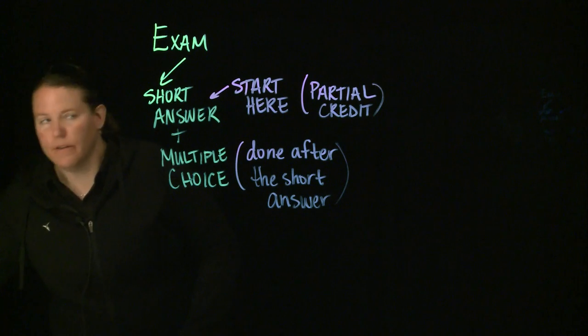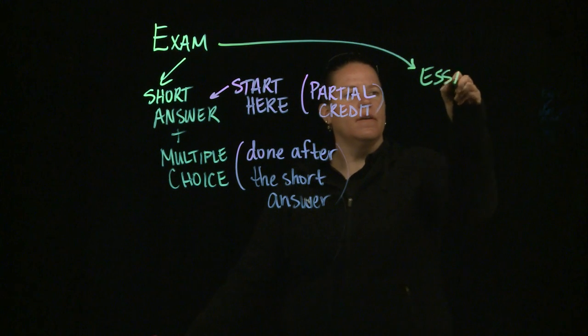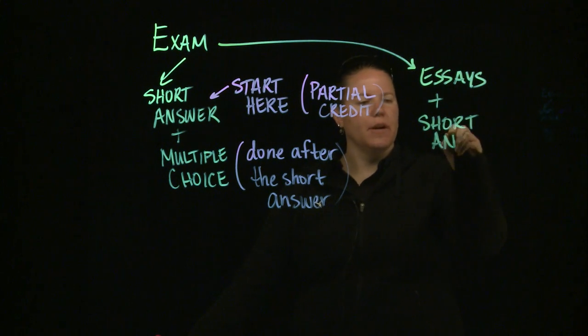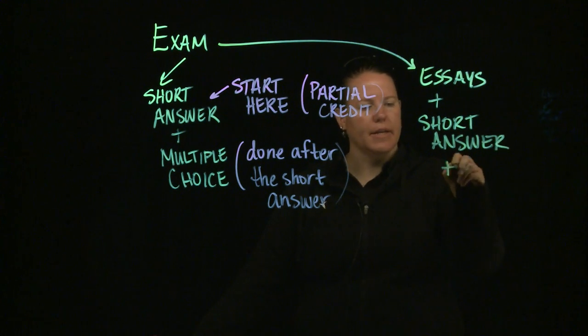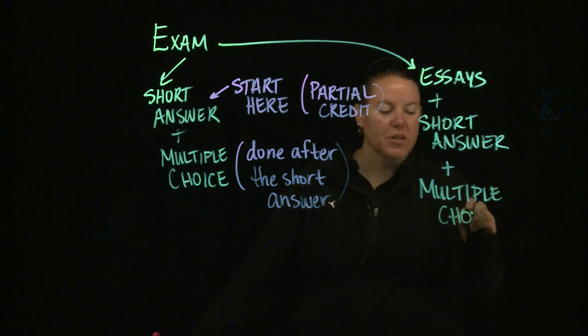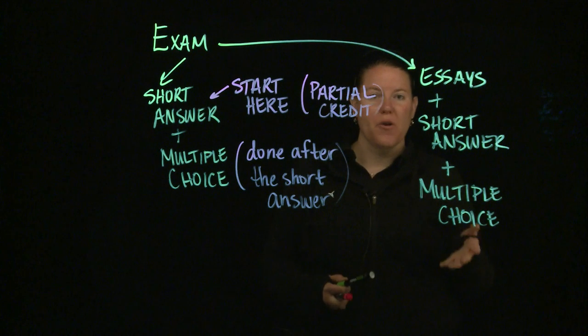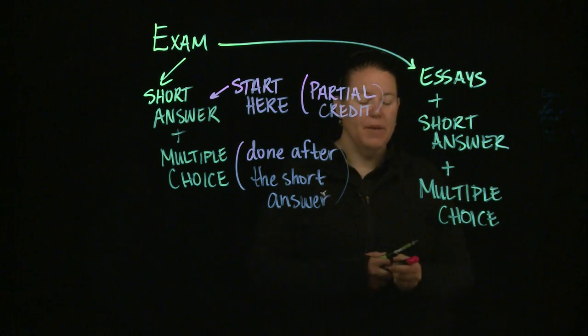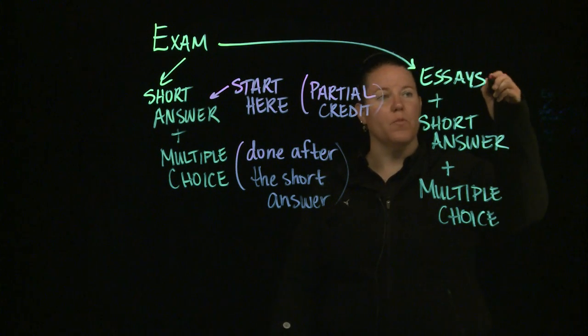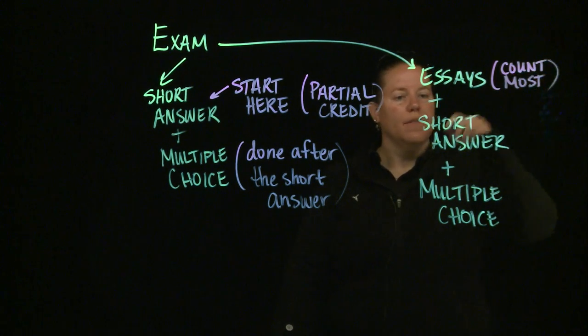What if you have essays plus short answer plus multiple choice? We have something that's all of them added together. Well, the idea here is that usually the multiple choice are up front. Usually the structure of the test is exactly opposite of the way I've written it here. Because what I'm writing here is the priority order of how you should probably take it. Because if short answers count for more than multiple choice, then essays usually count for more than the short answer do.